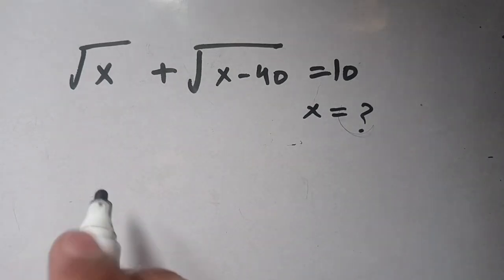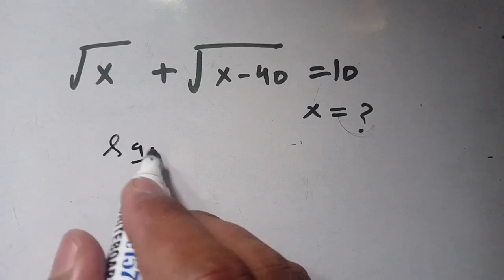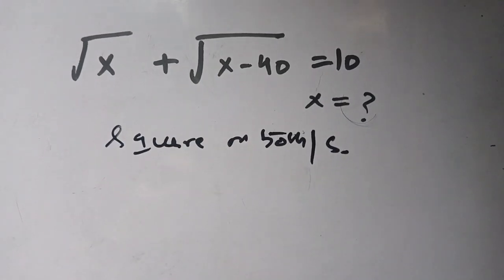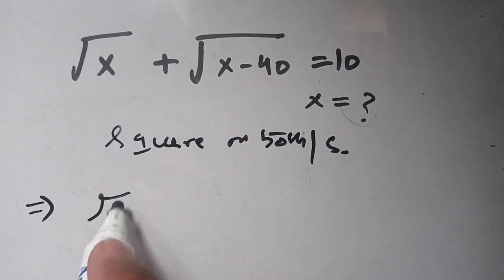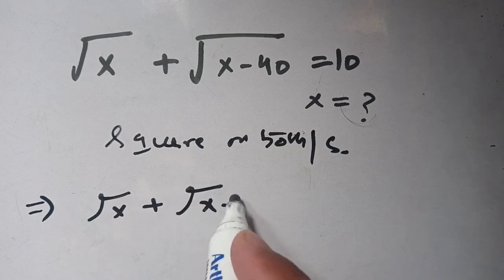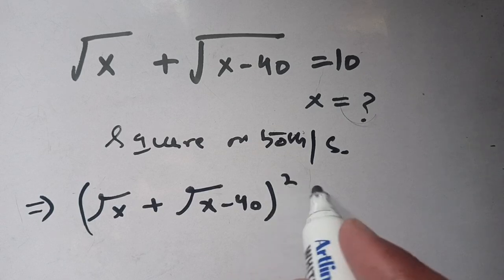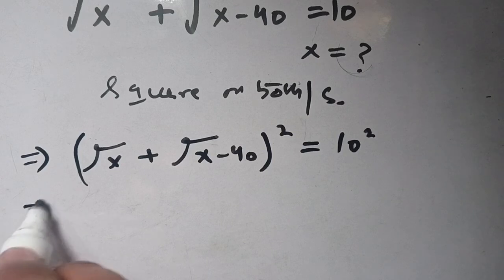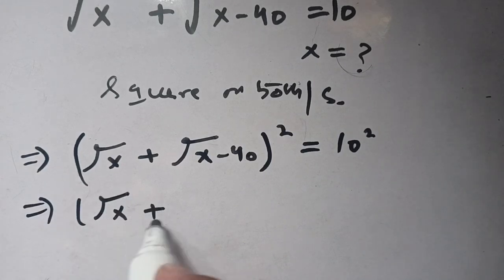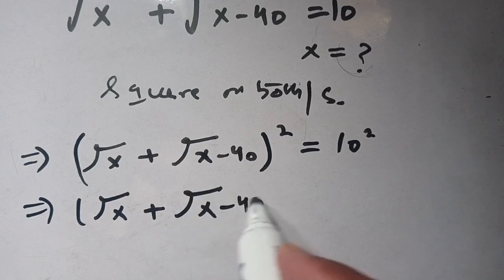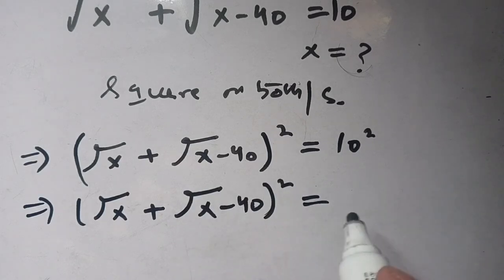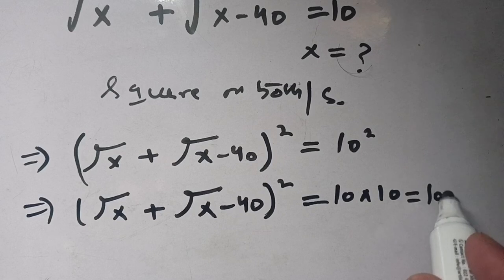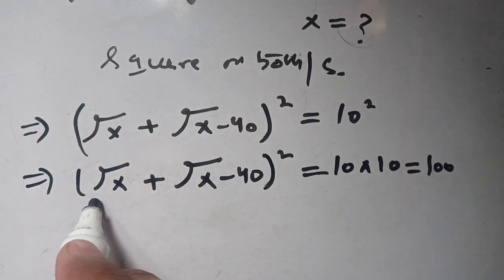First of all, in the first step we take a square on both sides. We get our left hand side: square root of x plus square root of x minus 40, whole square, it is equal to 10 square. In the next step we have square root of x plus square root of x minus 40, whole square, it is equal to 10 square, meaning 10 times 10, which is 100.